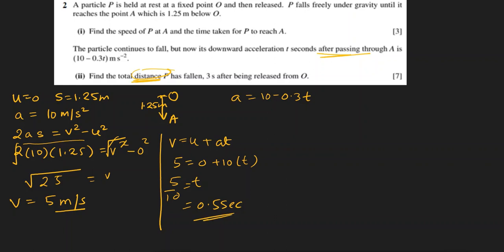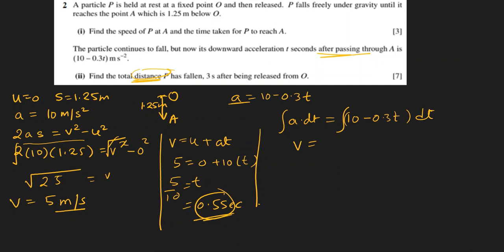They're saying three seconds after being released from O, so we have to subtract this 0.5 seconds from there. We need to find distance and we have acceleration, so we have to integrate this to get velocity. So it will be the integration of 10 minus 0.3T dT — this gives us velocity after point A.